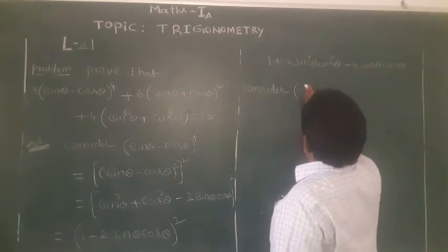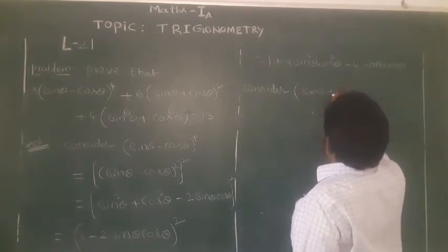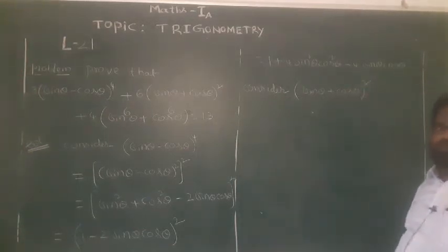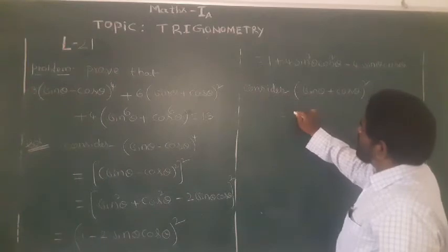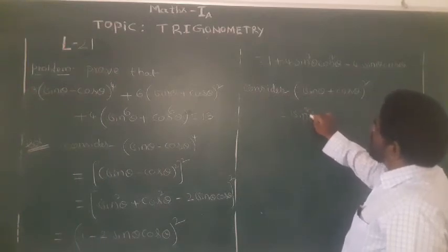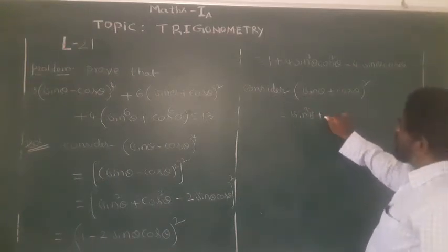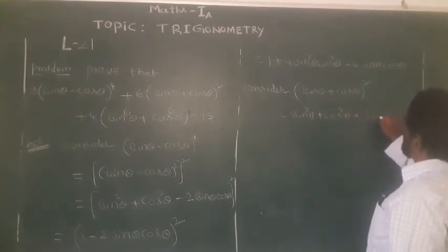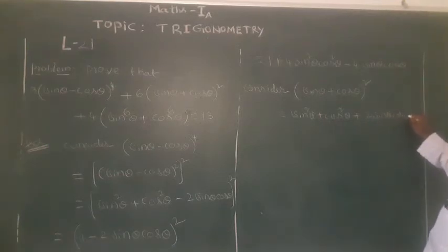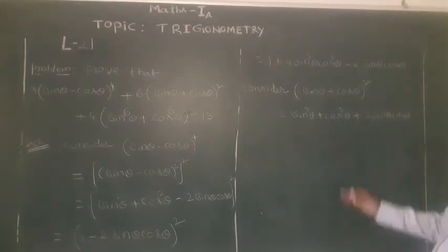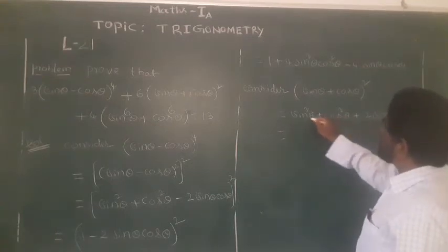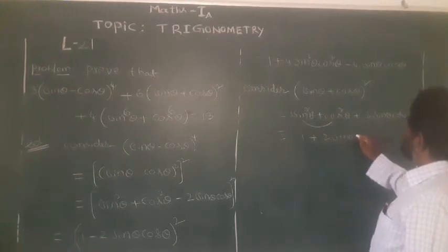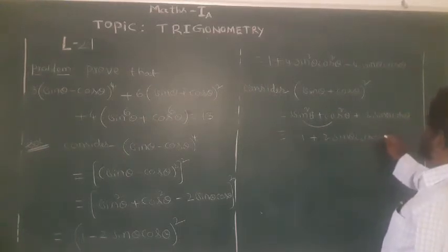Consider the second term: (sinθ + cosθ)² expanded by (A + B)² formula gives sin²θ + cos²θ + 2sinθcosθ. Since sin²θ + cos²θ = 1, the value of (sinθ + cosθ)² is 1 + 2sinθcosθ.